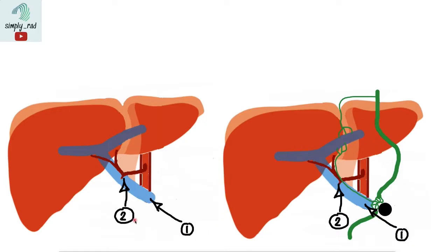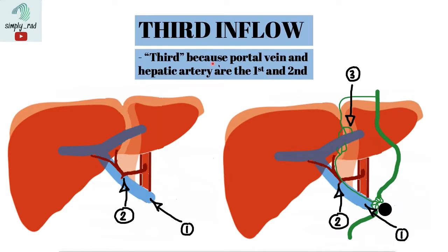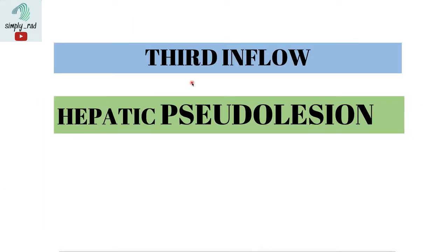The first and second inflow to the liver are labeled as one and two. Should there be a third blood vessel supplying blood flow into the liver, this would be called the third inflow — because the portal vein and hepatic artery are the first and second. This third inflow would cause a flow difference in predictable locations in the liver, and those portions supplied by third inflow vessels will have a different appearance, creating pseudolesions.